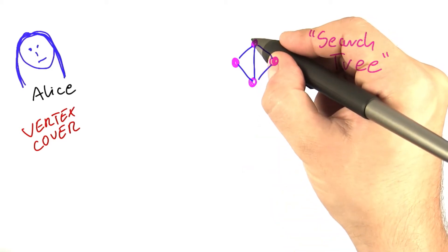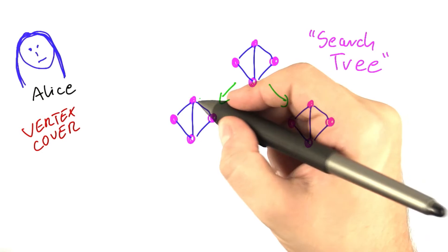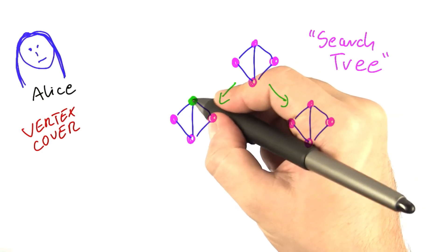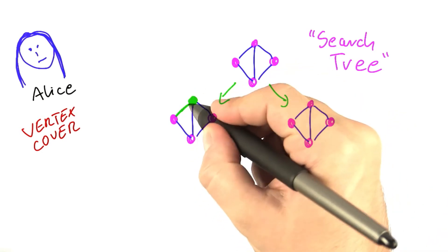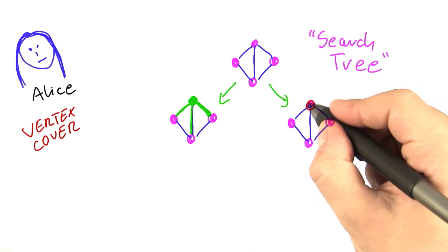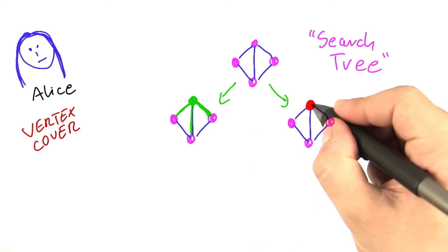But rather, you would look at a single vertex, say this one here, and then split into two possibilities. In one, you're going to say yes, let's make this vertex part of the vertex cover. In the other one, you would say no, I do not want this vertex to be part of the vertex cover.